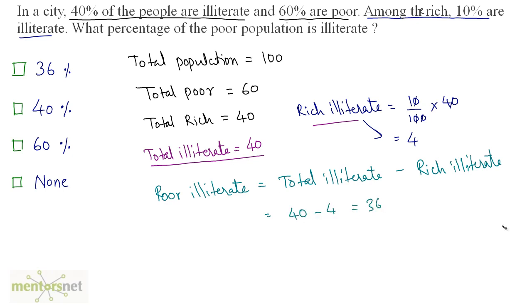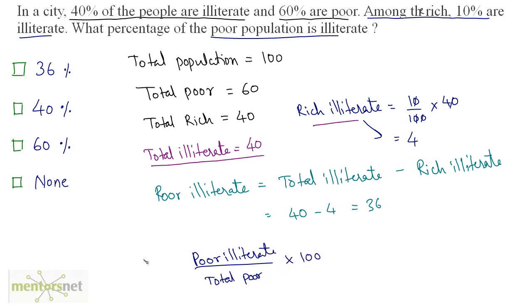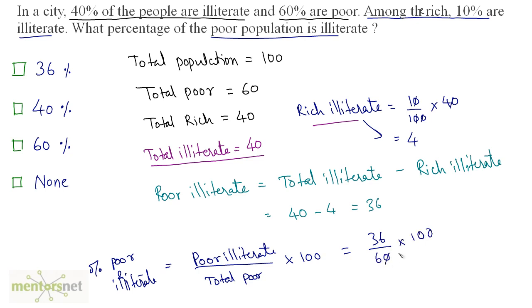The percentage of poor population that is illiterate is given by poor illiterate divided by the total poor population times 100. Poor illiterate are 36 people upon total poor of 60, times 100. So 36 upon 60 times 100 gives 60%. So 60% of the poor population is illiterate.